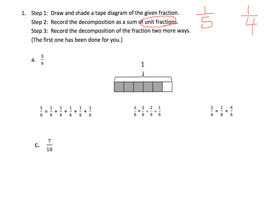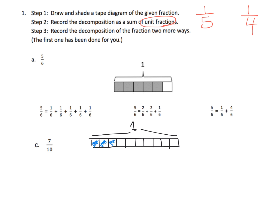For problem one, seven-tenths — we start with a bar of any length. Because the denominator is ten, we're going to cut it into ten equal-sized pieces. We label the entire thing one, and then we shade in seven of those ten pieces: one, two, three, four, five, six, seven. There is our drawing — step one is done.